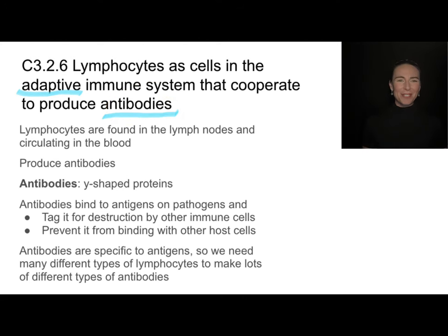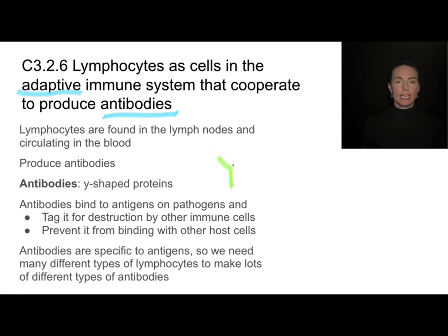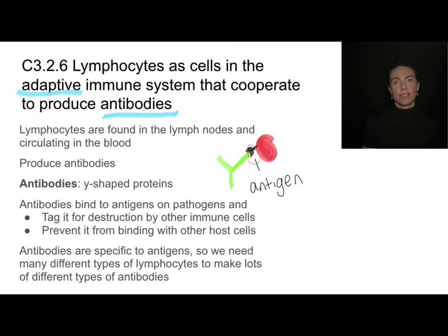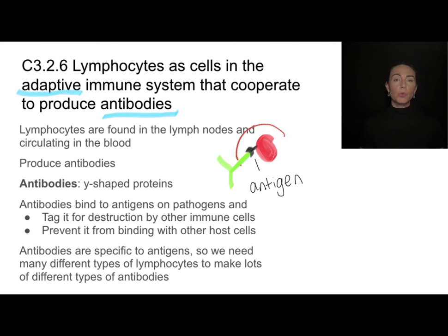Lymphocytes are cells found in the lymph nodes that circulate throughout the bloodstream. They produce antibodies, which are Y-shaped proteins with a special binding site on the end that will match with the antigen on the outside of a pathogen. That antigen is a recognition protein on the outside of a cell or virus, and antibodies have specially shaped binding sites to match those antigens. Once antibodies bind to the pathogen, they either tag it for destruction by other immune cells, or they prevent the pathogen from using its antigen to bind and infect other cells.